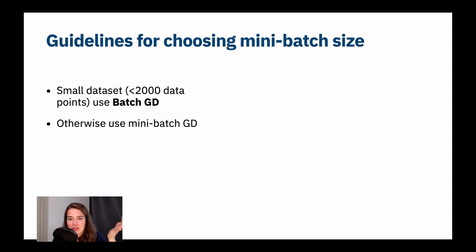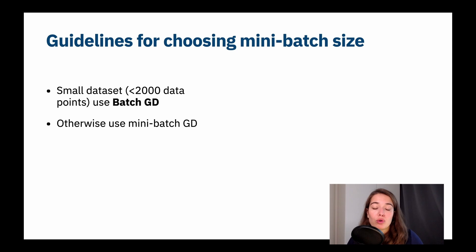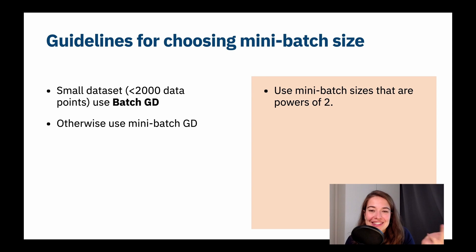What should your mini-batch size be? If you have a small data set — around a couple thousand data points — you can just use batch gradient descent since it won't be very slow. But with more examples, mini-batch gradient descent is better. One rule of thumb is to use mini-batch sizes that are powers of two: 2, 4, 8, 16, 32, 64, and so on.